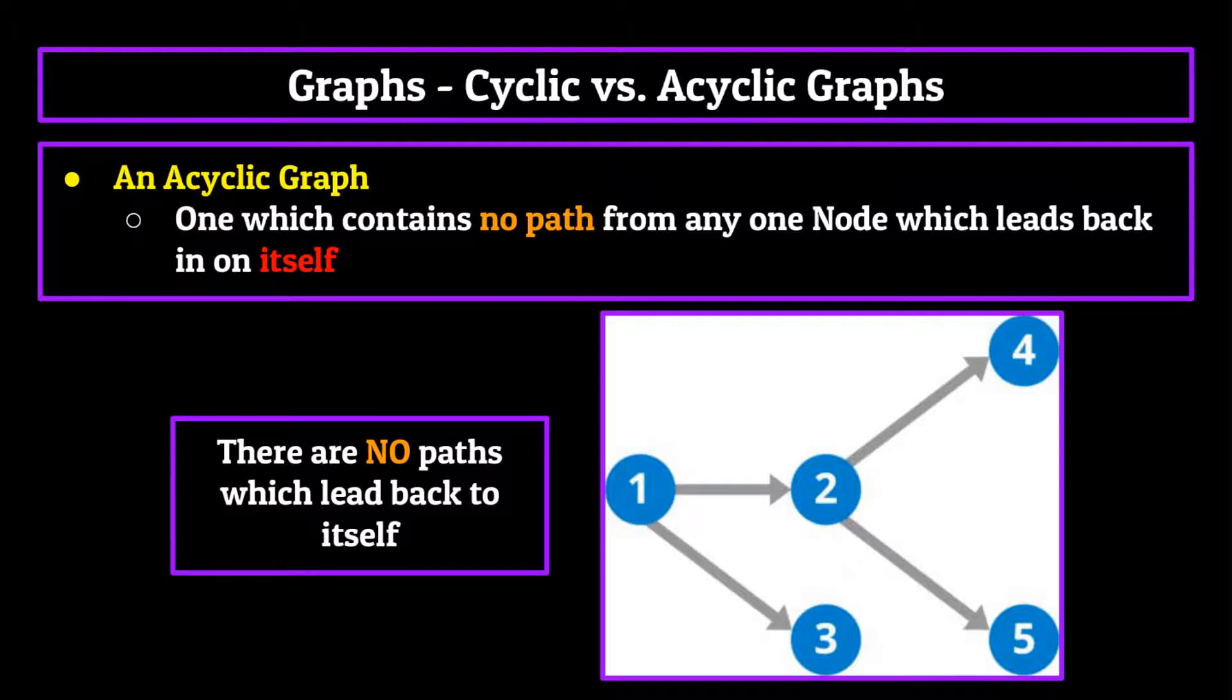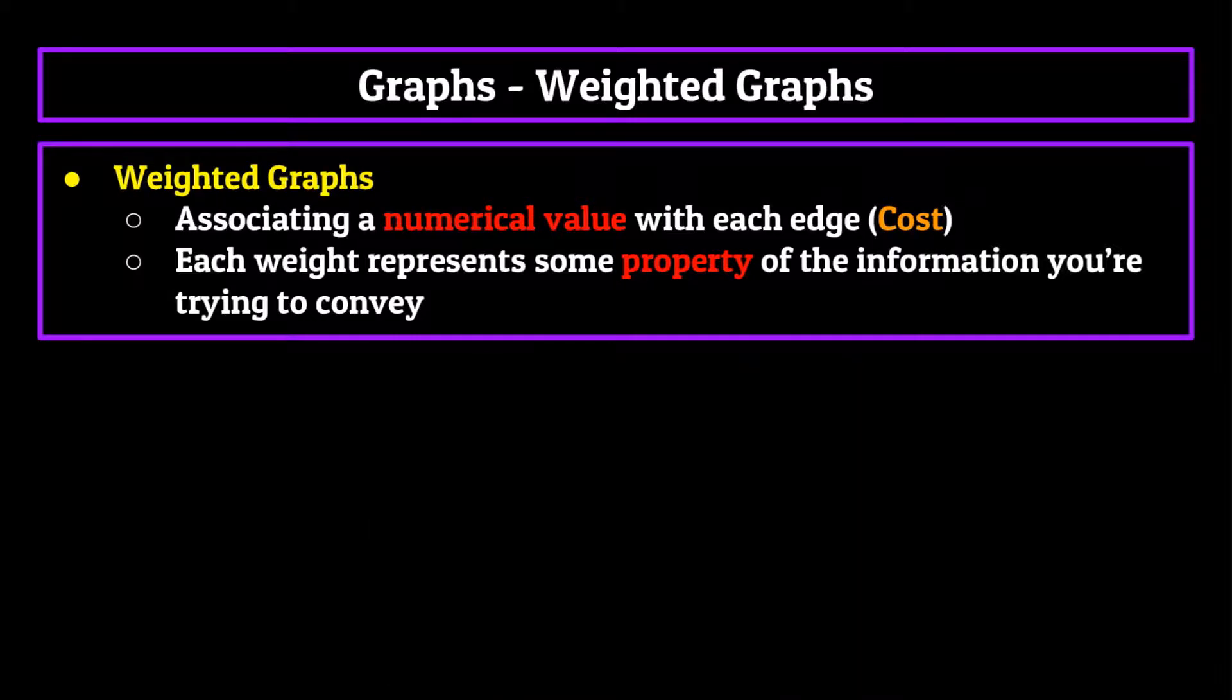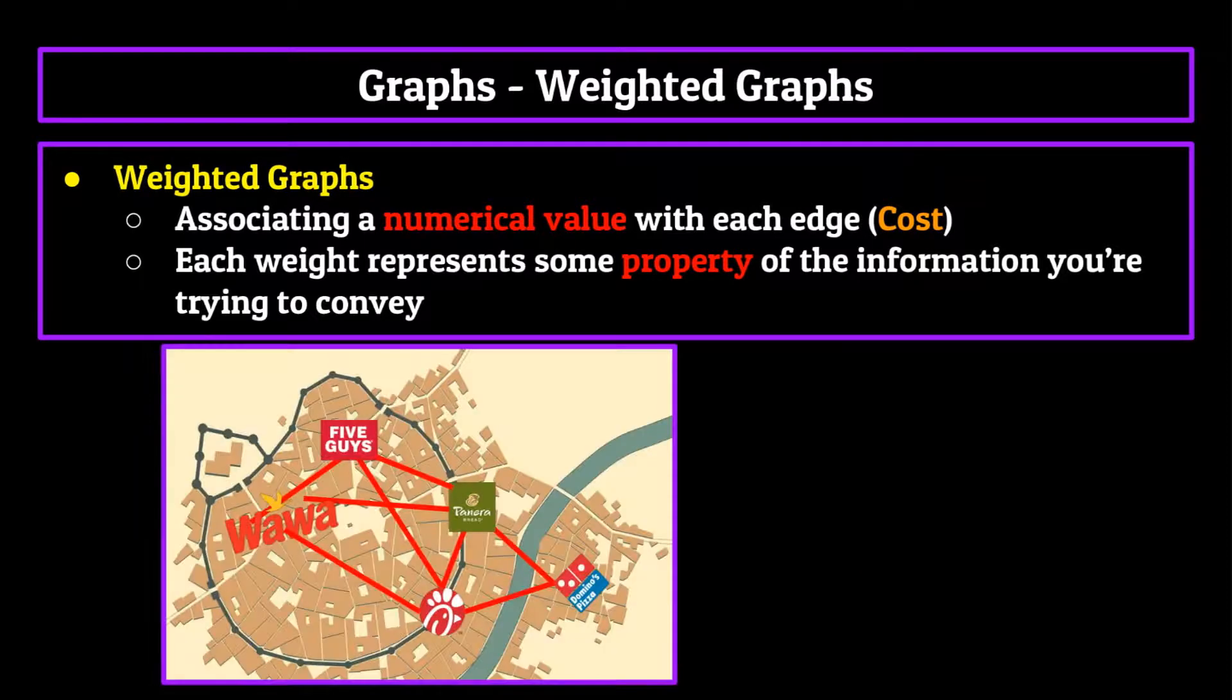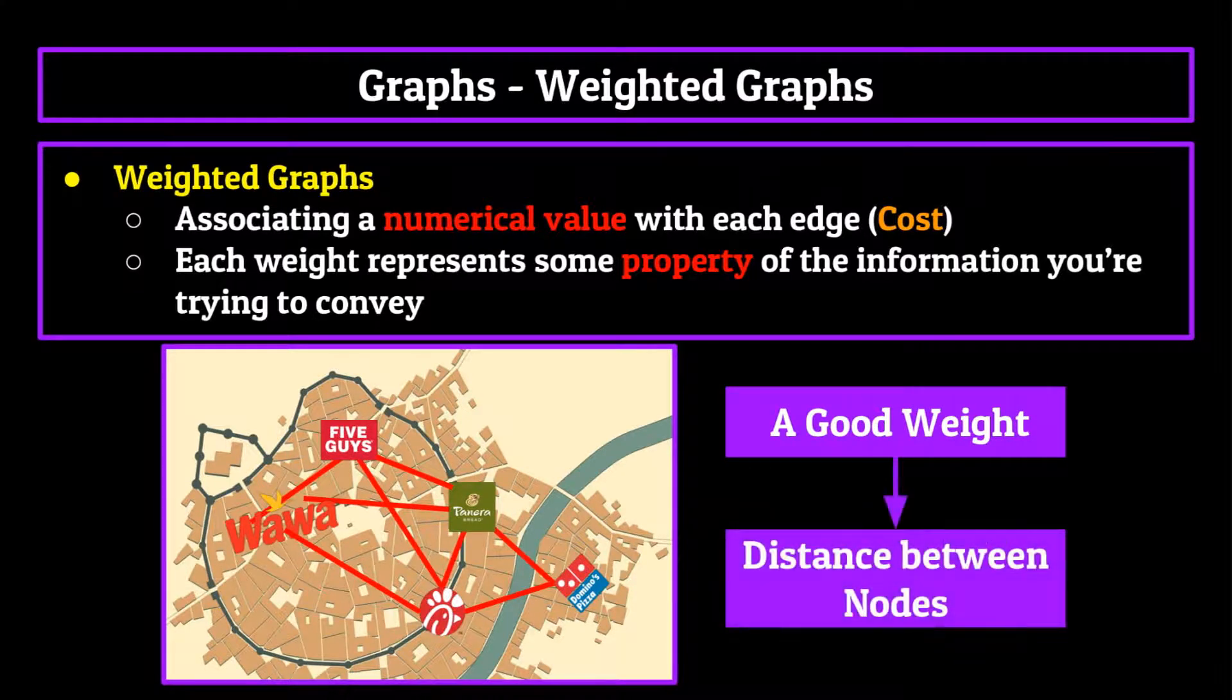The last property I want to mention actually applies to the edges of a graph instead of the nodes and is known as weighting. Weighting the edges on a graph essentially means associating a numerical value with each edge. Often called the cost of that edge, each weight represents some property of the information you're trying to convey. For example, again, going back to our food example, since the information we're trying to convey is a good route which takes us to each location, a good weight for our edges in that scenario could be the distance between nodes.